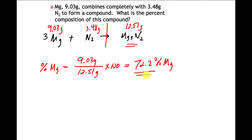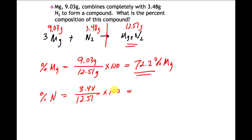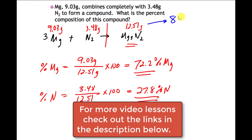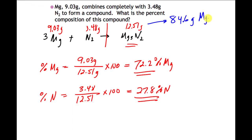Most of you might think: couldn't I just subtract from 100 to get nitrogen's percentage? You could, but if you made a mistake earlier, you'd carry it forward. So go back to the original numbers. Dividing them out gives 27.8% for nitrogen. These percentages are always locked to this substance. If you had 84.6 grams of magnesium nitride, you could use that 72.2% to find the mass of magnesium in it. That's mass percents — thanks!